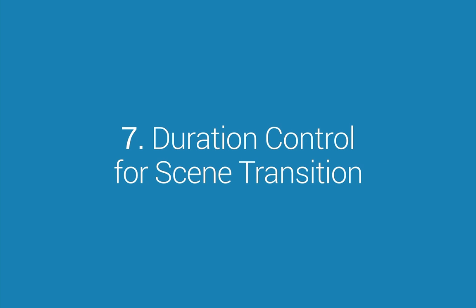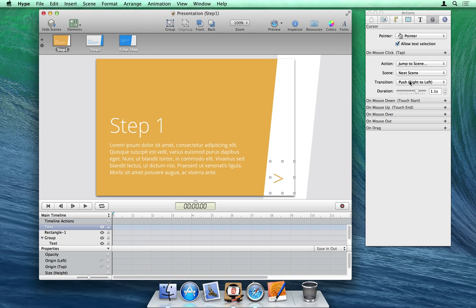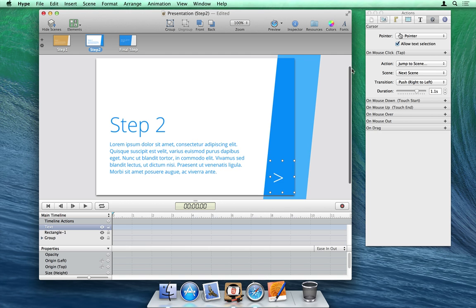Number 7: Duration Control for Scene Transitions. This was another popular request. The timing for scene transitions can now be changed to be much quicker or as slow as you may need in some circumstances.